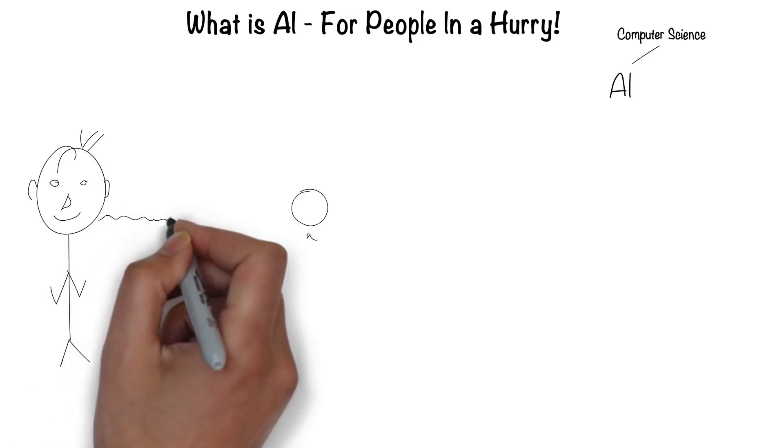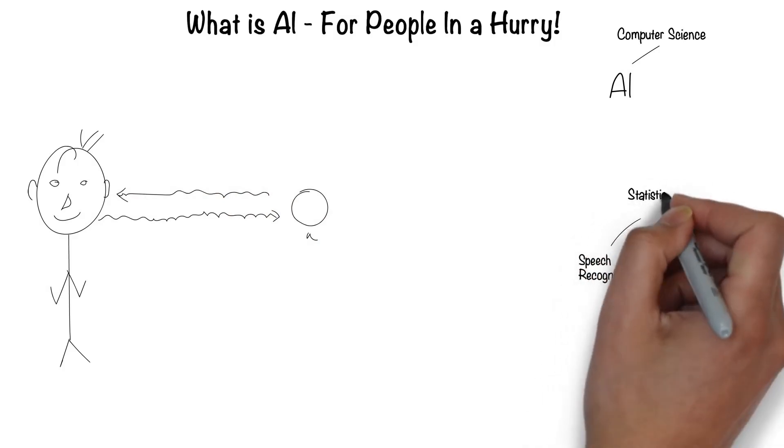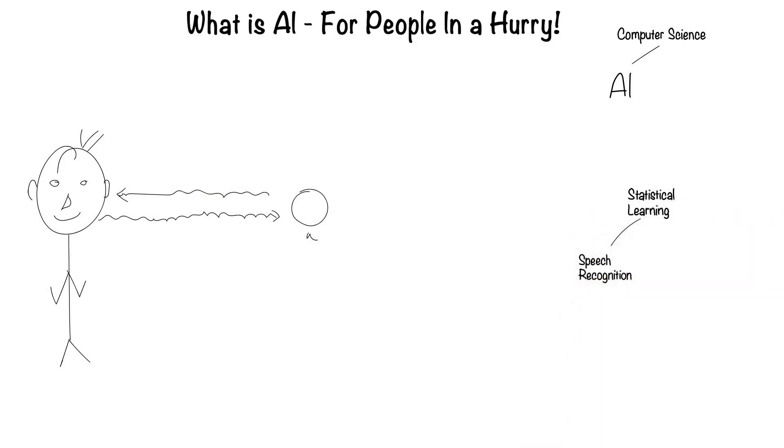Humans can speak and listen to communicate through language. This is the field of speech recognition. Much of speech recognition is statistically based. Hence, it's called statistical learning.